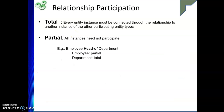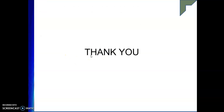Now, relationship and participation — total and partial. Total means every entity instance must be connected through a relationship to other instances of the other participating entity type. For example, employee heading a department: not all employees are head of the department, but every department will be headed by an employee. So the department side is total participation, and the employee side is partial participation.